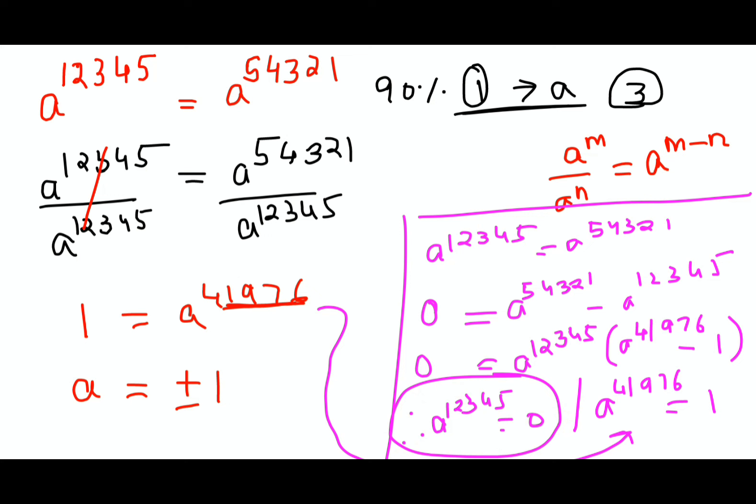Anything raised to a power will get you the value 0 only if the base is 0. So here, my dear friends, these are the three values for A: plus 1, minus 1, and 0. That's it for today, I will see you in the next video.